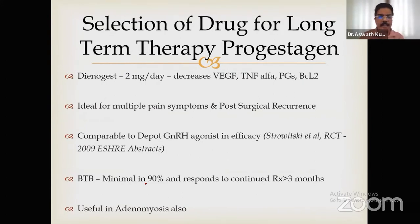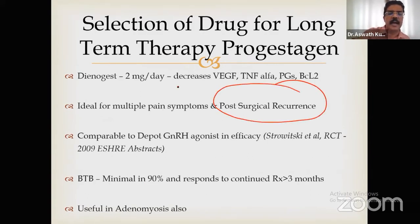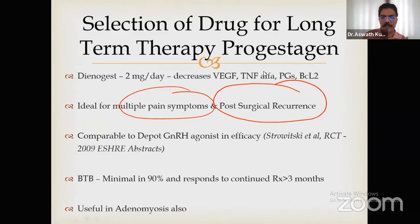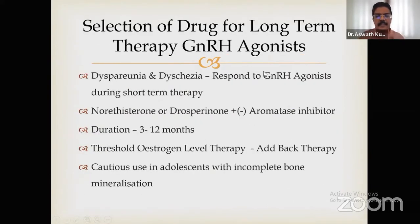Progestogens — specifically dienogest 2 mg per day — are used for post-surgical recurrence and multiple pain symptoms. Dienogest has efficiency equivalent to GnRH agonists. Breakthrough bleeding is minimal, but you must encourage the patient to continue beyond three months to see a response.